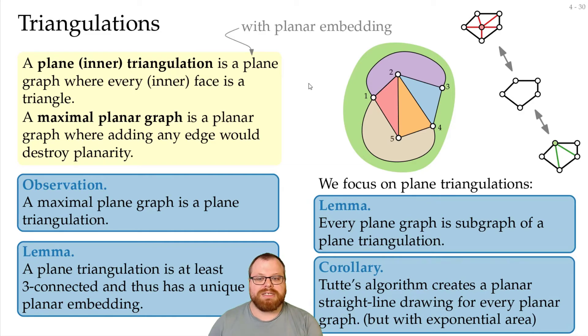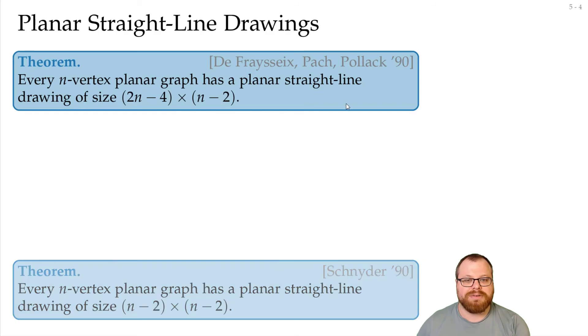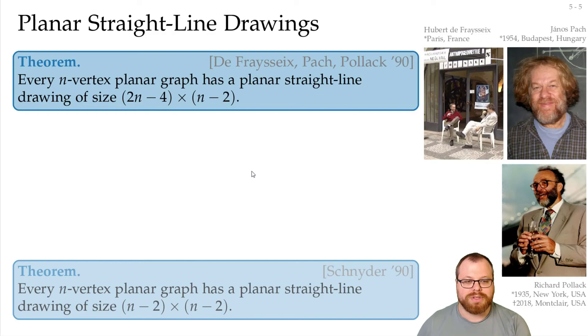There are two algorithms that we want to focus on that create drawings in polynomial area. They were independently found both around 1990. The first one, by de Fraysseix, Pach and Pollack, achieves a planar straight-line drawing for every n-vertex planar graph on a grid of size 2n-4 times n-2. The second one, by Schnyder, gets a slightly better bound with n-2 times n-2. This one we will have a look at next week, so for today, this is the result we want to prove. These are the three authors of it.